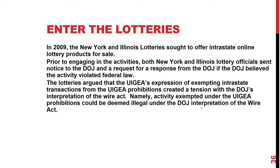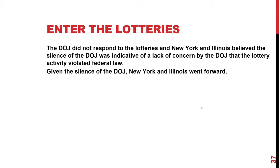In 2009, New York and Illinois sought to offer interstate online lottery products and sent a letter to the Department of Justice saying they didn't think this violated the Federal Wire Act, particularly given the tension created by the Unlawful Internet Gambling Enforcement Act of 2006. If the DOJ thought they were wrong, they asked to be informed; otherwise they would go forward and start selling lottery subscriptions online to their own residents. The DOJ did not respond, and given the silence, New York and Illinois went forward.